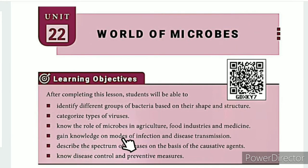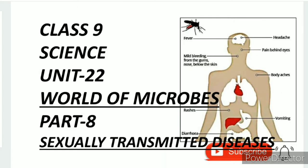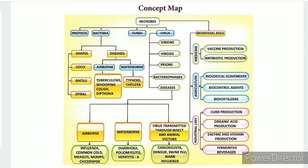For the learning objectives, the QR code link and ICT corner link are given in the description box below. The unit guide is also available in the description box. In this lesson, a total of 9 topics are covered, and currently we are on the 8th topic: sexually transmitted diseases.